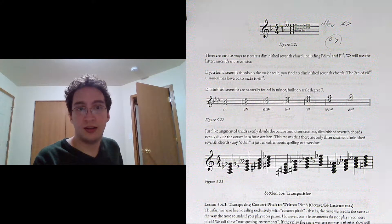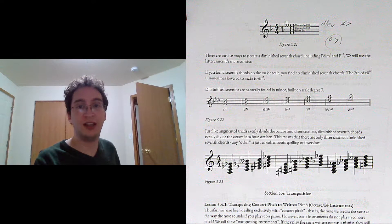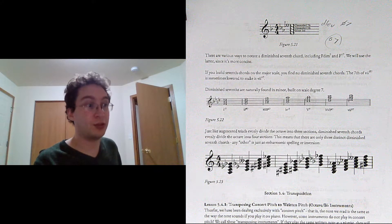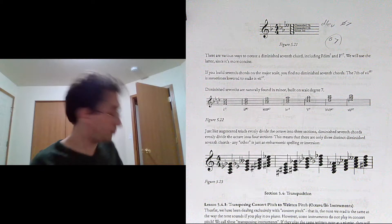So just like augmented triads evenly divide it into three sections, diminished 7th chords evenly divide it into four sections. This is all minor 3rds though. So minor 3rd, minor 3rd, minor 3rd, and then another minor 3rd brings you back to tonic.